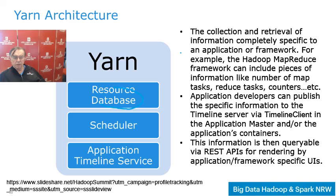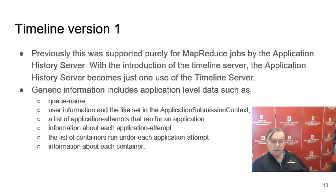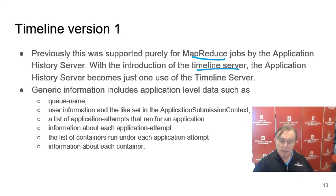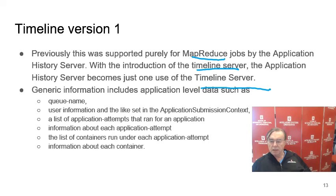In YARN we have not only resource management and the scheduler, but also a timeline service. There is a version 1 timeline in Hadoop 2, and a version 2 timeline with extended capabilities in Hadoop 3. Originally MapReduce just had a history server storing the history of the application — when it did things. The timeline server made this more flexible with an interface where you could send messages storing any type of data you wanted. It captures things like the user name, queue names, application attempts that ran and failed, how long they ran, where they ran, and the list of containers used with information about each.